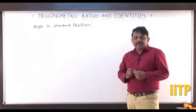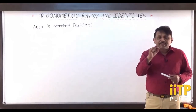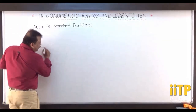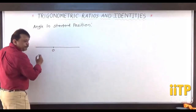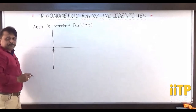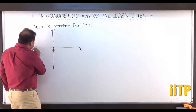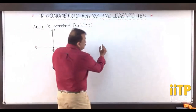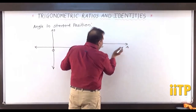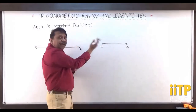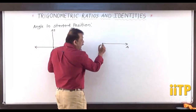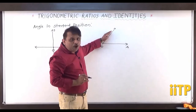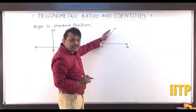The next concept we define is the angle in standard position. Take the x-axis, the origin, and the y-axis. Using the new definition, the angle has an initial ray which we rotate about O either in anti-clockwise or clockwise direction. Wherever we stop, that becomes the terminal ray of the angle. So we have an initial ray and a terminal ray.